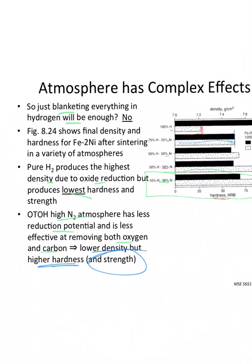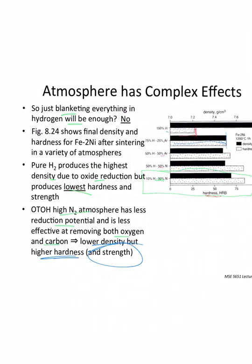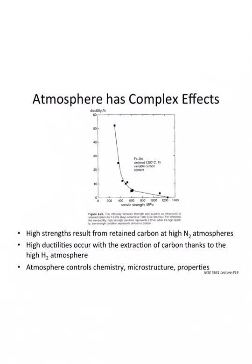There is a density threshold below which properties become unacceptable. Hardness and tensile properties differ because tensile properties will target pores. At around 7.0 g/cc for Fe-2Ni, the tensile properties would start to drop substantially even if hardness looks acceptable. All the densities shown in the data are fairly comparable, so they're all reasonable. We want these to be high-modulus alloys.